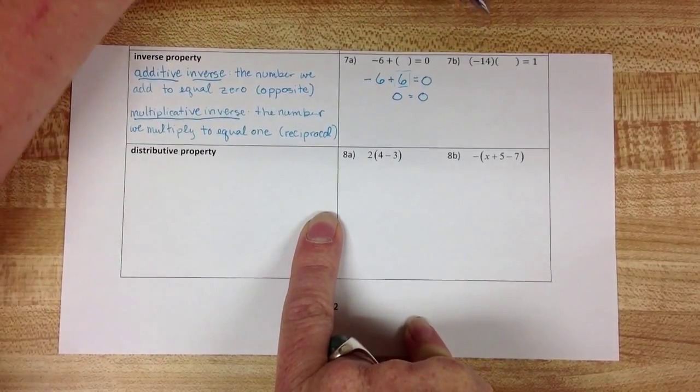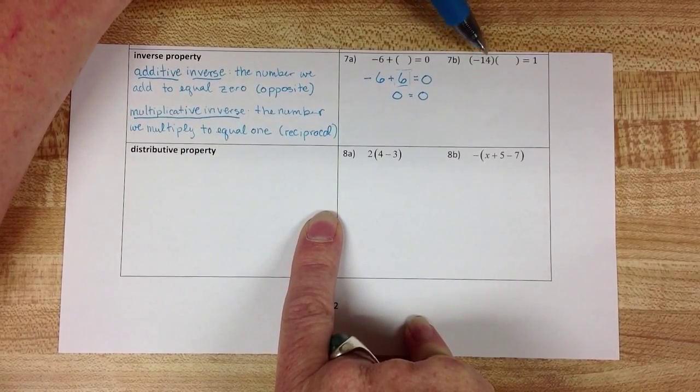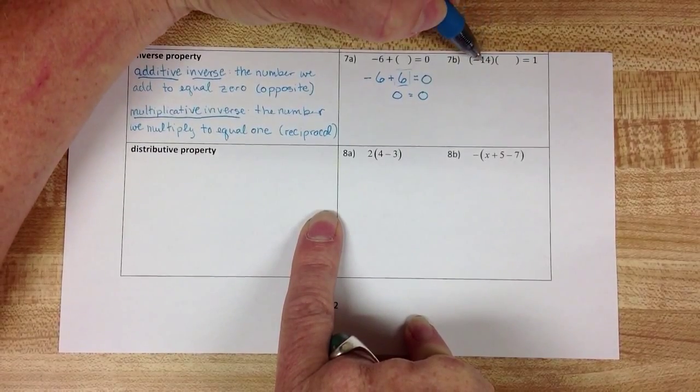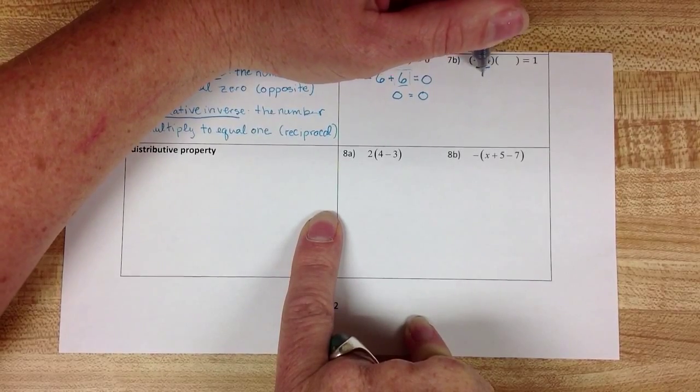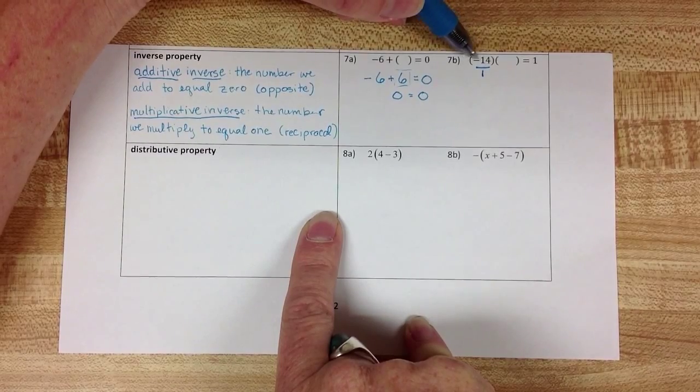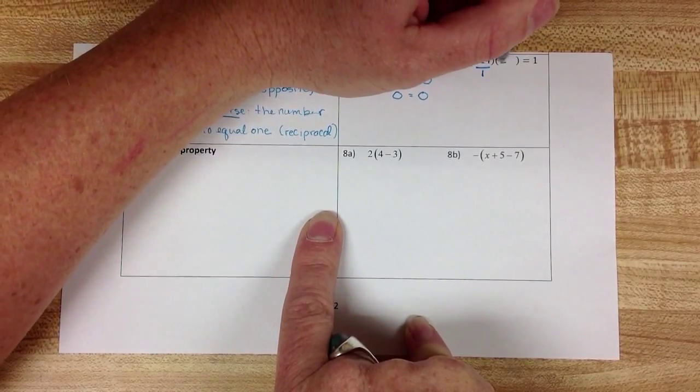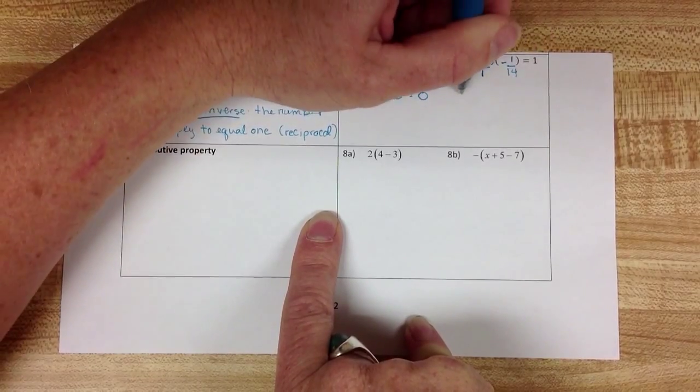For multiplicative inverse, I'm asking myself what do I need to multiply negative 14 by in order to get 1. So the reciprocal of negative 14. First I'm going to make negative 14 into a fraction so that I can find its reciprocal. The reciprocal of negative 14 over 1 is going to be negative 1 over 14.